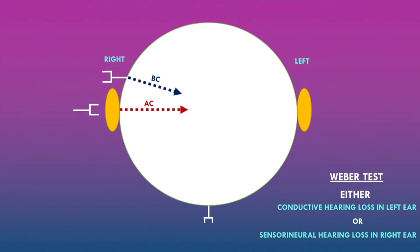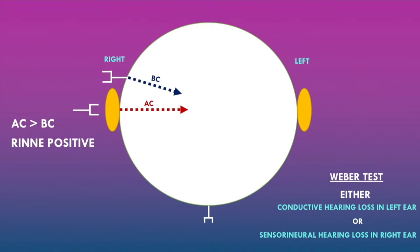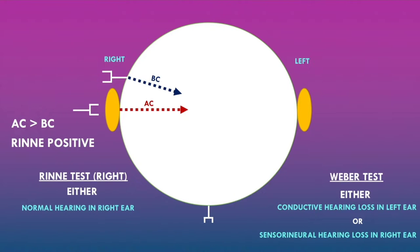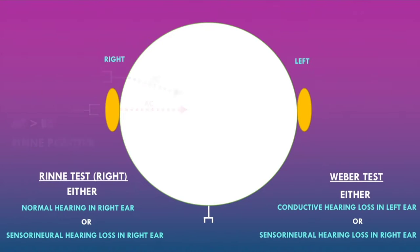Now let's think about the findings of the Rinne test in the right ear. When the vibrating tuning fork is placed over the ear this is testing air conduction, and when placed on the mastoid bone behind the ear this is testing bone conduction. In this example, air conduction was greater than bone conduction — a Rinne positive test in the right ear — indicating either normal hearing or sensorineural hearing loss in the right ear.